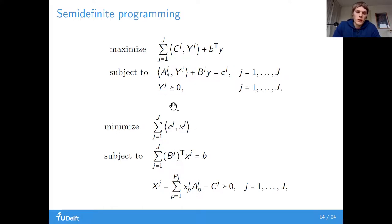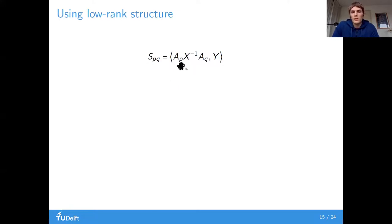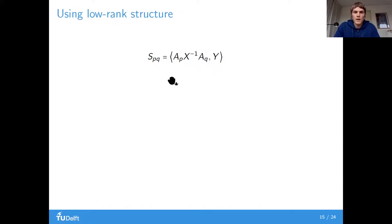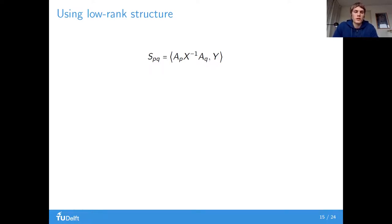In the solver, we use a Newton search direction, for which we need second-order derivatives of the equations. For that, we need a certain matrix whose entries are given by the primal variables, the dual variables, and the coefficient matrices. Computing this matrix and taking a Cholesky decomposition of it are the most computationally expensive steps, so we focus on speeding those up.